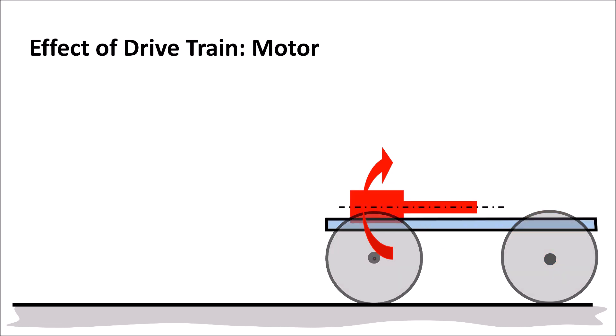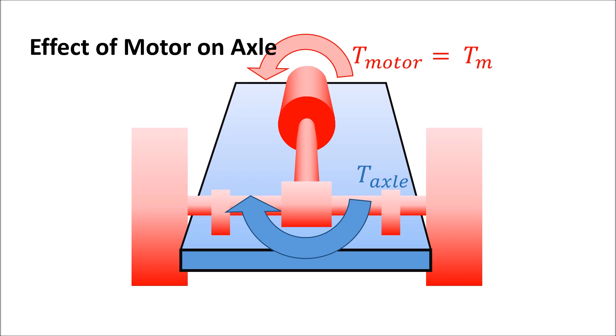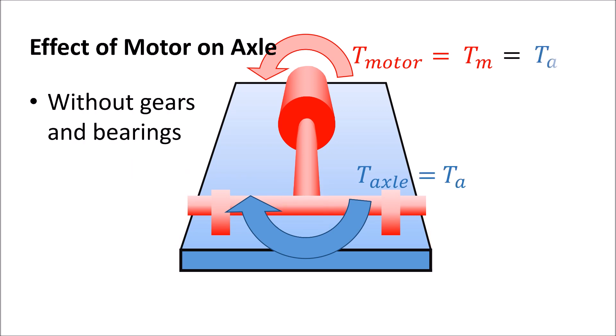The motor torque without gears and bearings would be transferred to the axles as it is and lead to a bending torque at the axles TA that is equal to the motor torque.